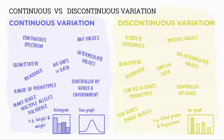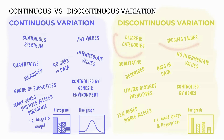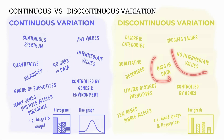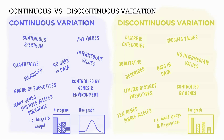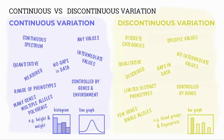Comparing the two types of variation: continuous variation shows a continuous spectrum of any values with intermediate values and no gaps, while discontinuous shows discrete categories with specific values and gaps in the data. Continuous variation is controlled by genes and the environment, involving many genes (polygenic) or multiple alleles, resulting in a range of phenotypes and quantitative data that can be measured. Discontinuous variation is controlled by genes only, with very few genes or single alleles, producing limited distinct phenotypes and qualitative data that can be described. Continuous variation is illustrated in histograms or line graphs; discontinuous variation is shown in bar graphs with gaps between distinct groups.